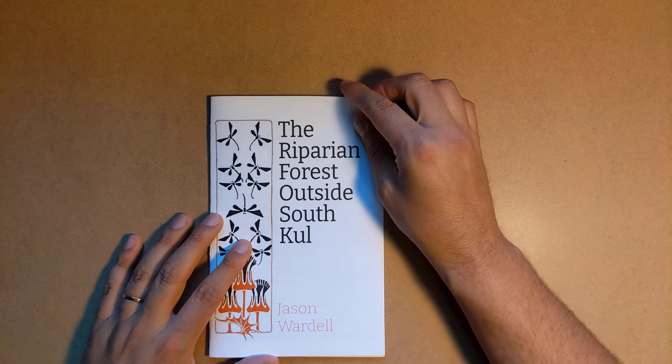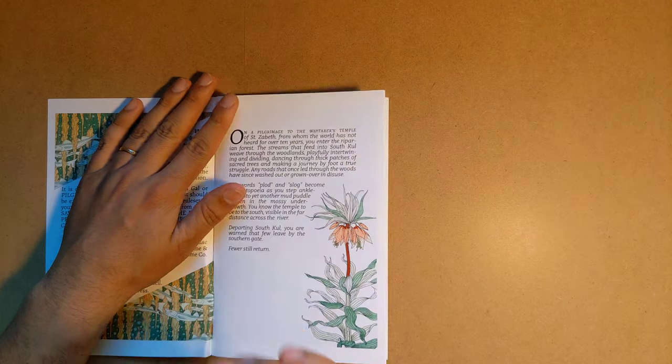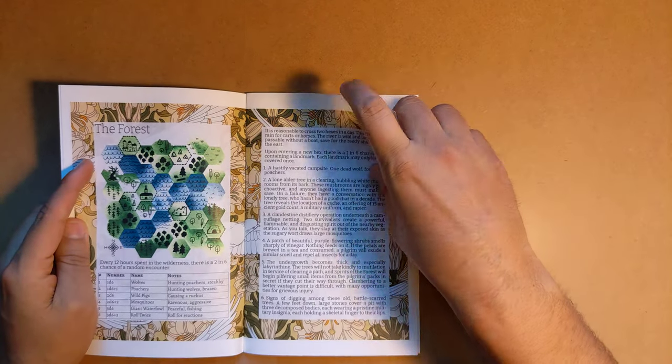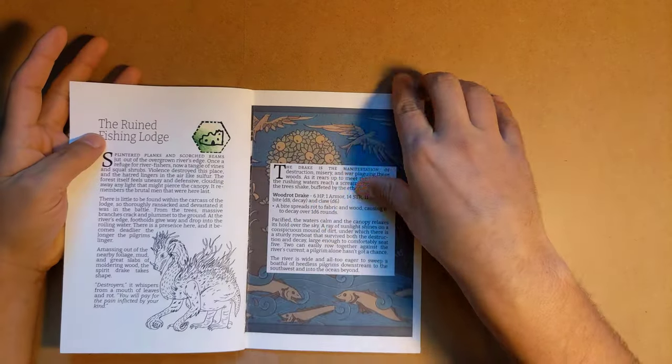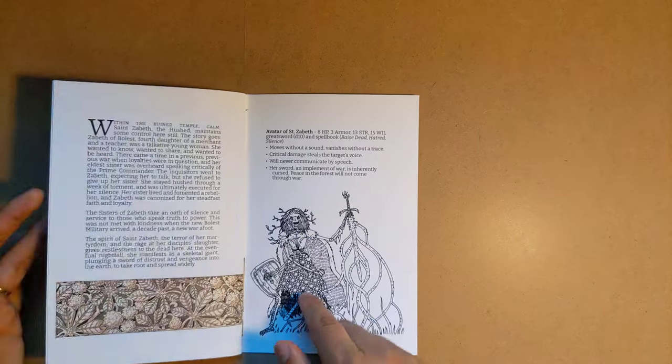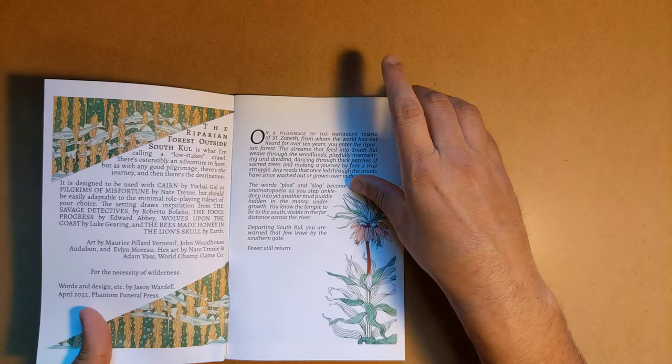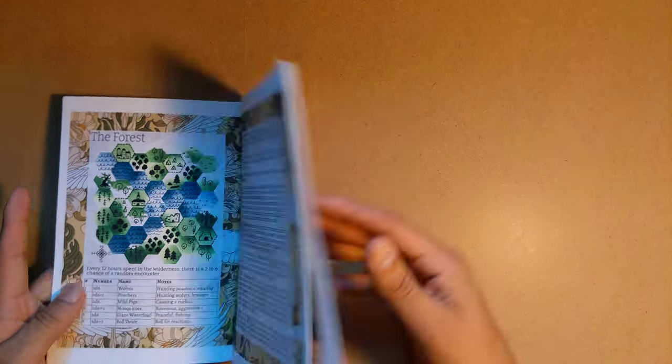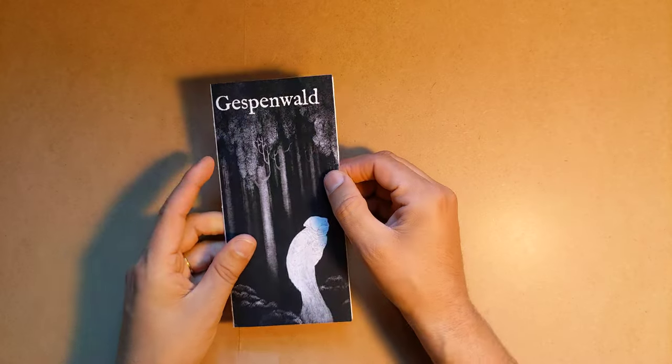Next is The Riparian or Riparian Forest Outside South Coal by Jason Wardell. It is a low-stakes crawl around a woodland temple. You can see it's got some Evelyn M. art. These hex tiles, I don't remember who the tiles are from. I thought it was Nate Treme again, but I'm not sure.